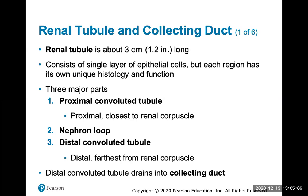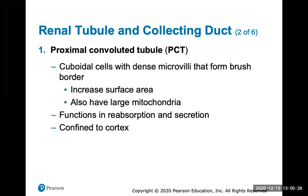The renal tubule is about three centimeters long, consists of a single layer of epithelial cells, and each region has a unique histology and function. The three parts are: the proximal convoluted tubule (PCT), closest to the renal corpuscle; the nephron loop, also called the loop of Henle, which goes down and up; and the distal convoluted tubule (DCT), furthest from the renal corpuscle. The DCT drains into the collecting duct. The PCT contains cuboidal cells with dense microvilli and functions in reabsorption and secretion.